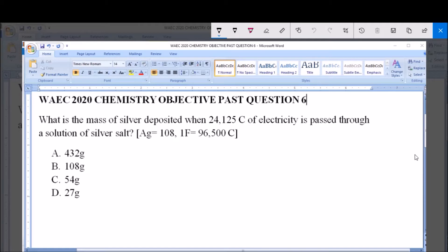What is the mass of silver deposited when 24,125 coulombs of electricity is passed through a solution of silver salt? You have Ag Silver 108, 1 Faraday is equal to 96,500 coulombs.